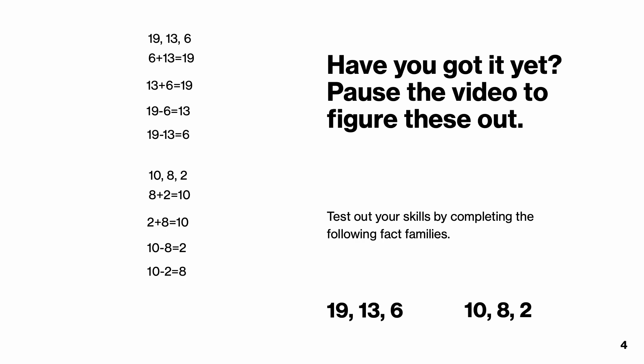Second fact family, 10, 8 and 2, is made up of 8 plus 2 equals 10, 2 plus 8 equals 10, 10 minus 8 equals 2, and 10 minus 2 equals 8. Did you get them correct?